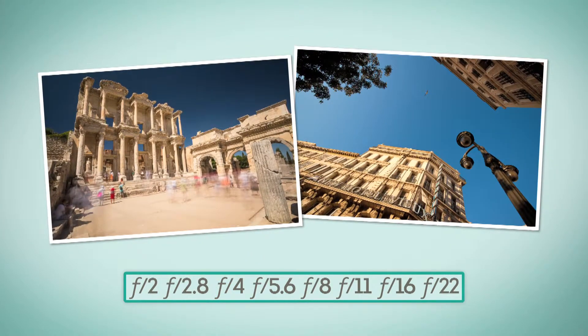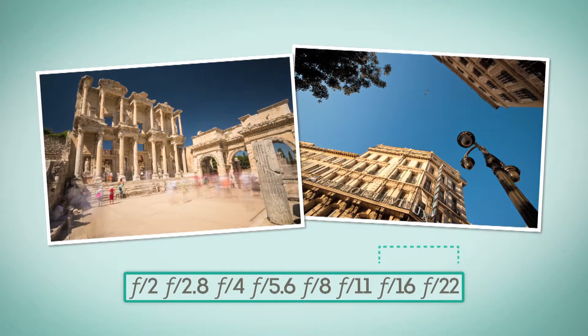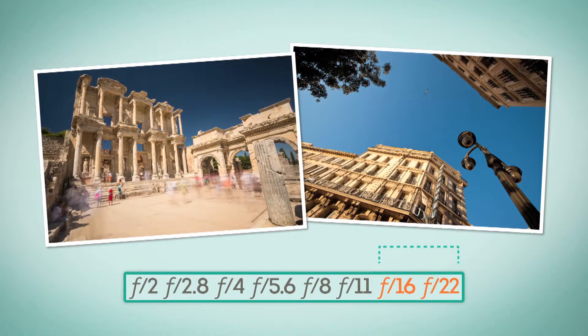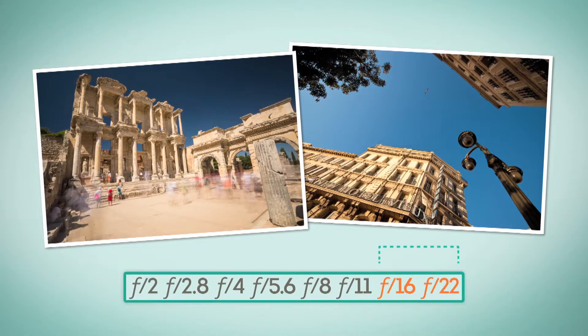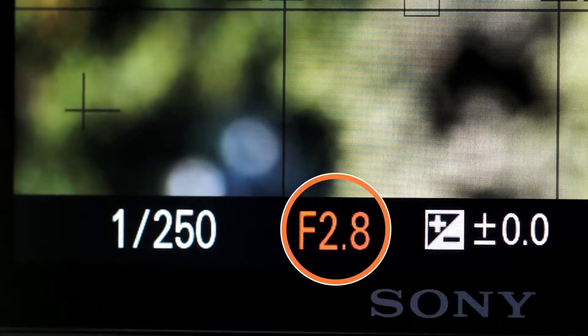In bright conditions where less light is needed, the size of the aperture we select will be smaller. Numbers like F16 or F22 indicate a small aperture. This is where you can find aperture readings on your camera.